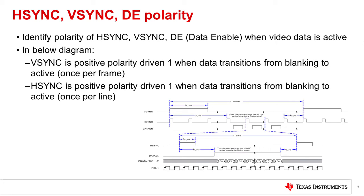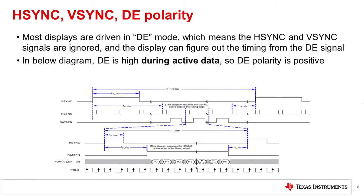You also need to identify the polarity of the H-sync, V-sync, and data-enabled pulses in the display datasheet. For example, in this diagram, V-sync is positive polarity driven high when data transitions from blanking to active, and H-sync is positive polarity driven high when data transitions from blanking to active. For data-enabled, most displays are actually driven in DE mode, which means the H-sync and V-sync polarity don't matter. In this diagram, since DE is high during active data, DE polarity is positive.